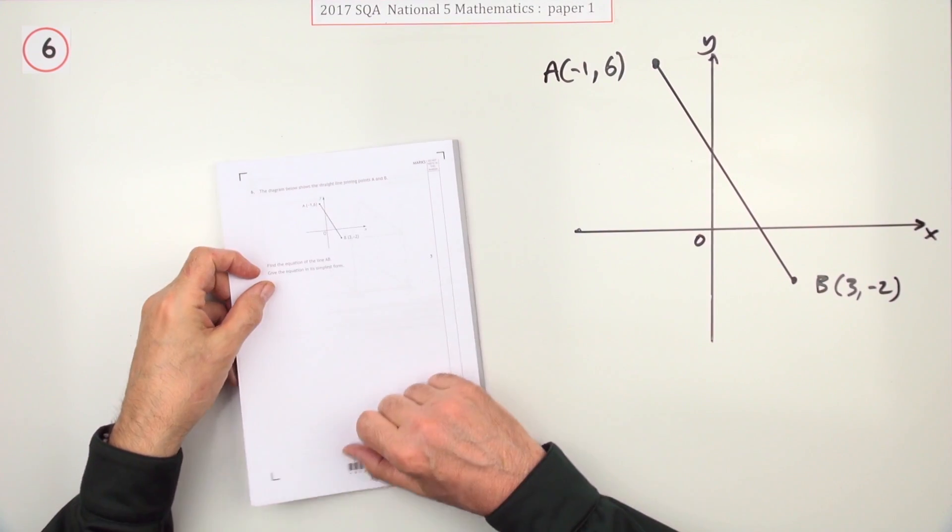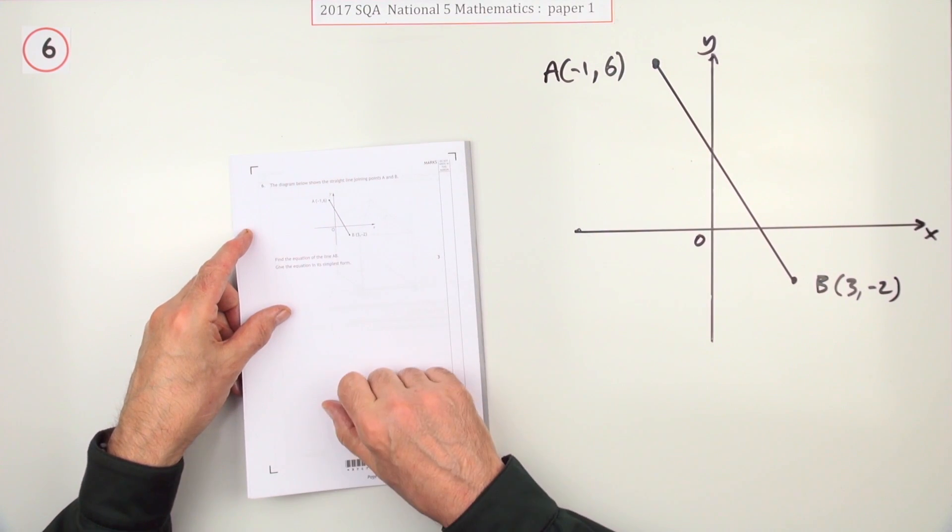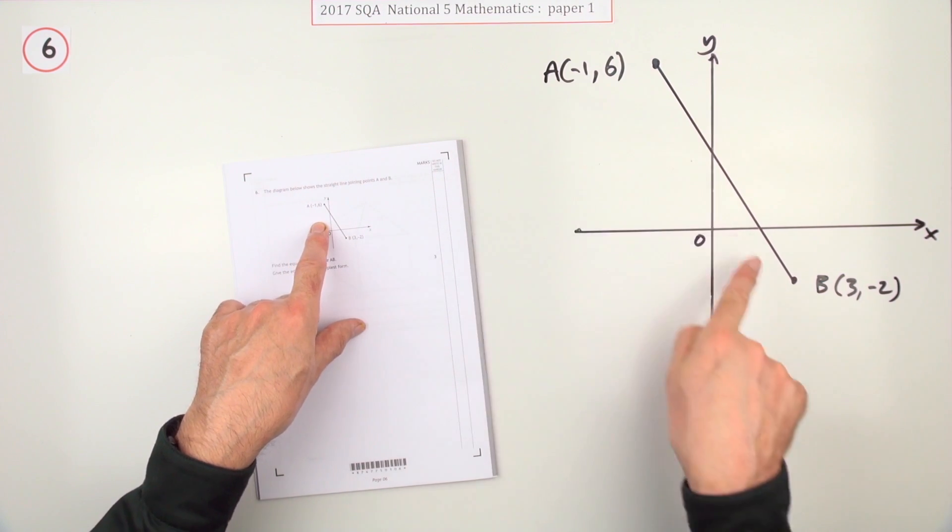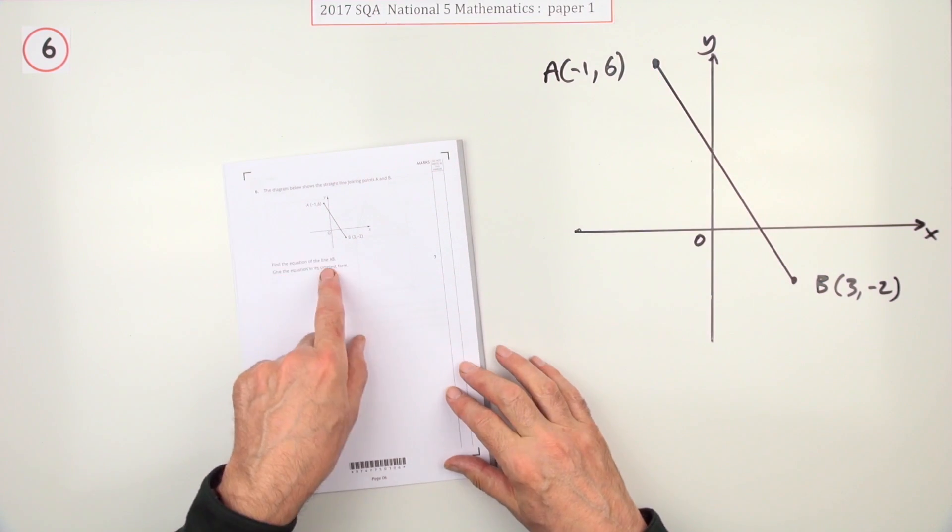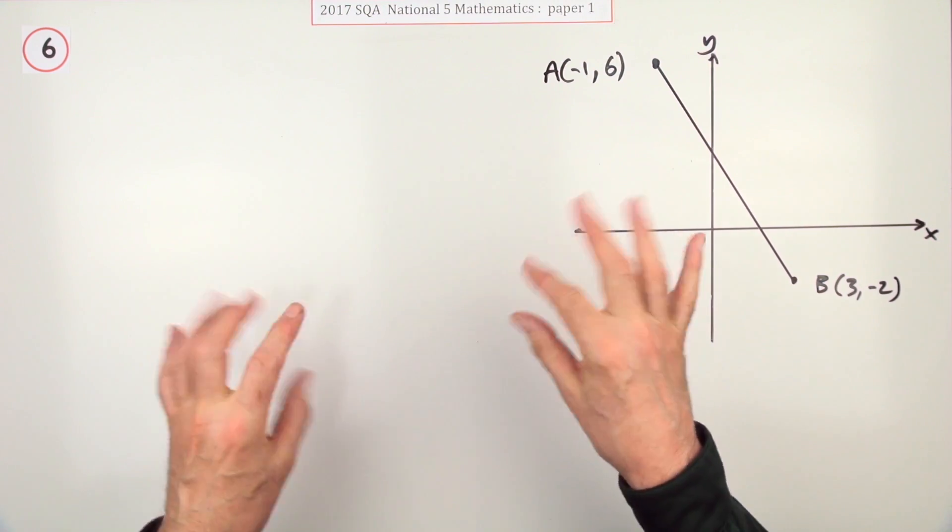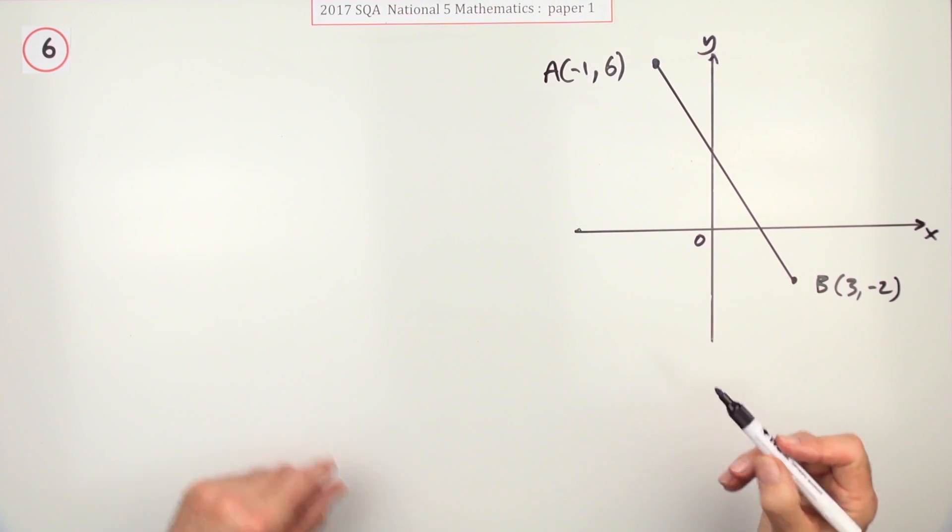Number 6 then. Equation of a line, 3 marks. This diagram shows 2 points A and B with a line joining them. You have to get the equation of this line in its simplest form, so don't leave anything lying about.